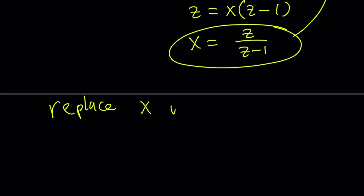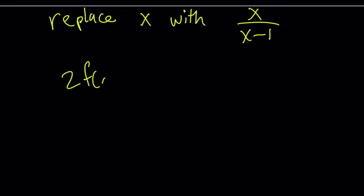We'll replace x with x over x minus 1. Let me rewrite the original problem. We have 2 f of x minus f of x over x minus 1 equals x. Now we're going to replace x with this everywhere.